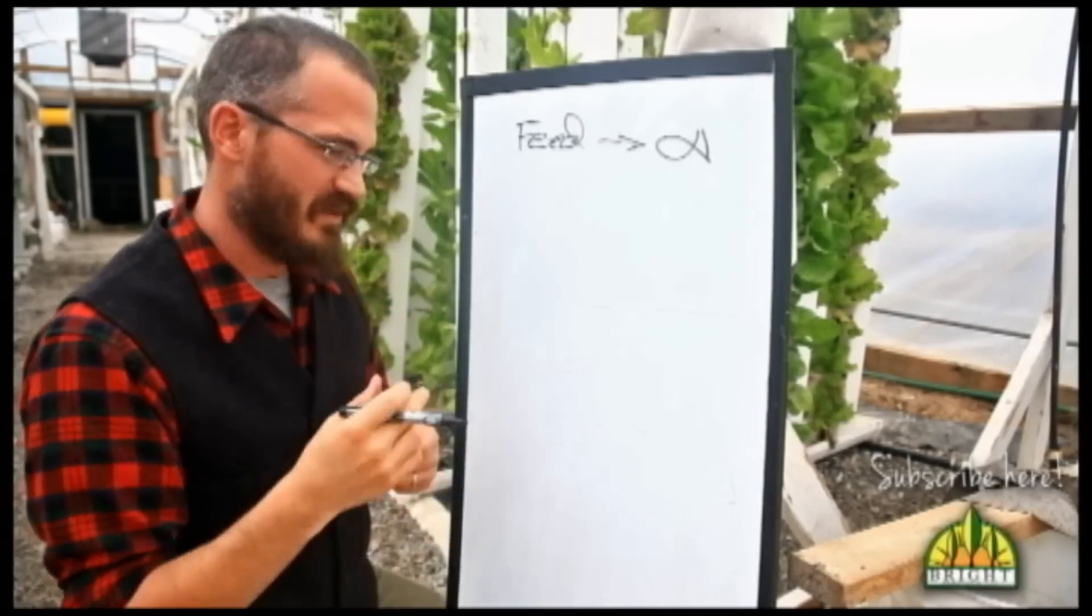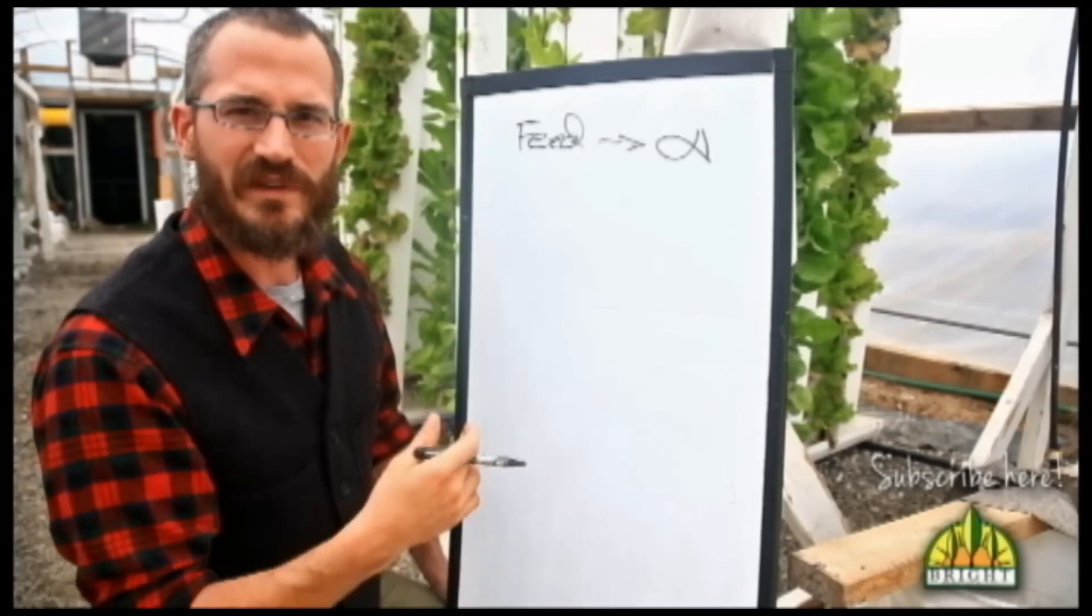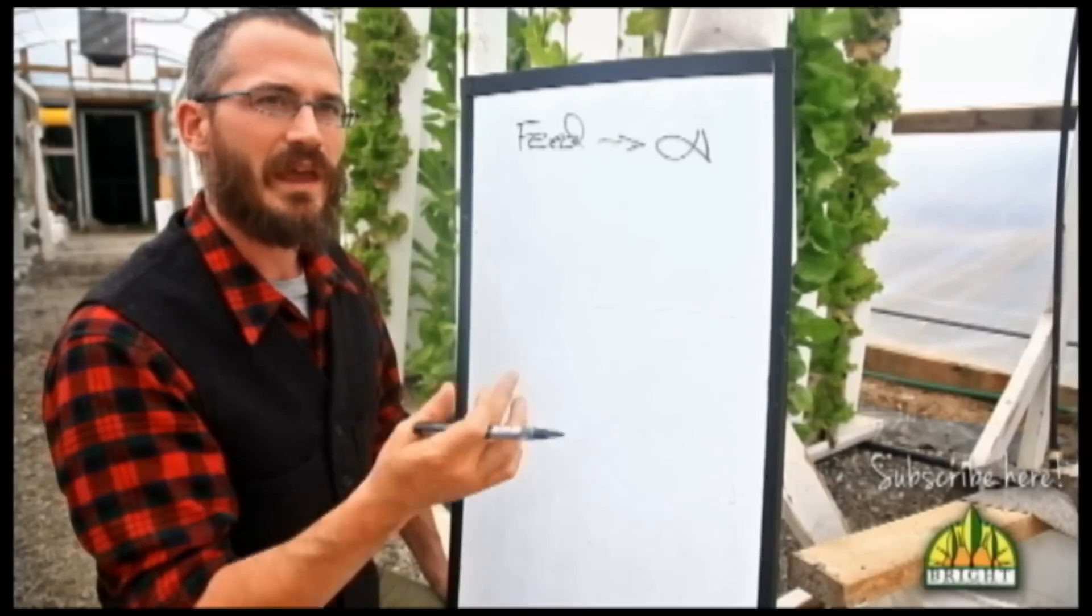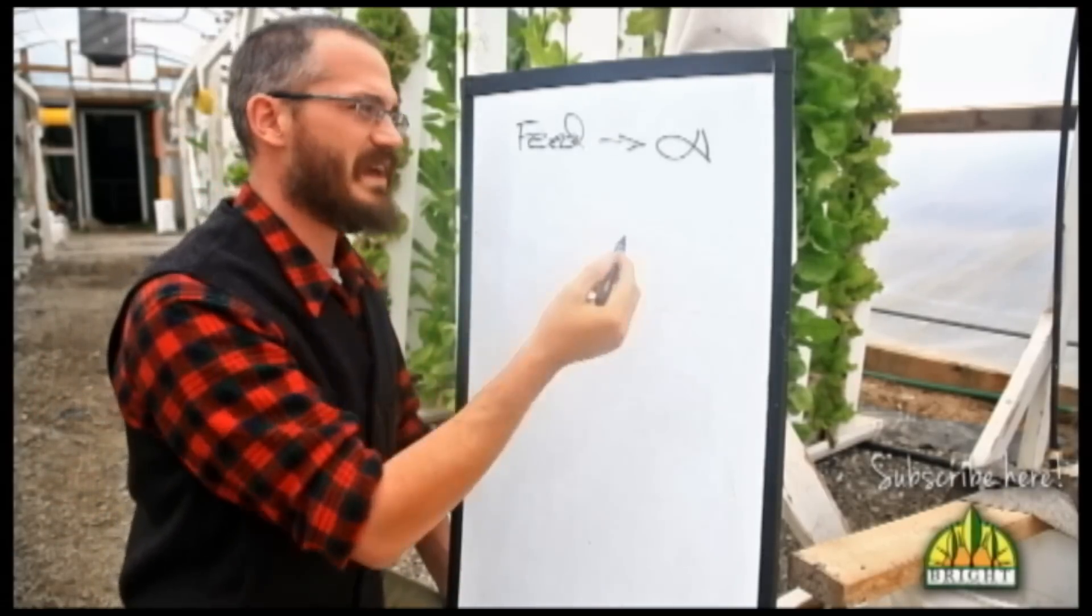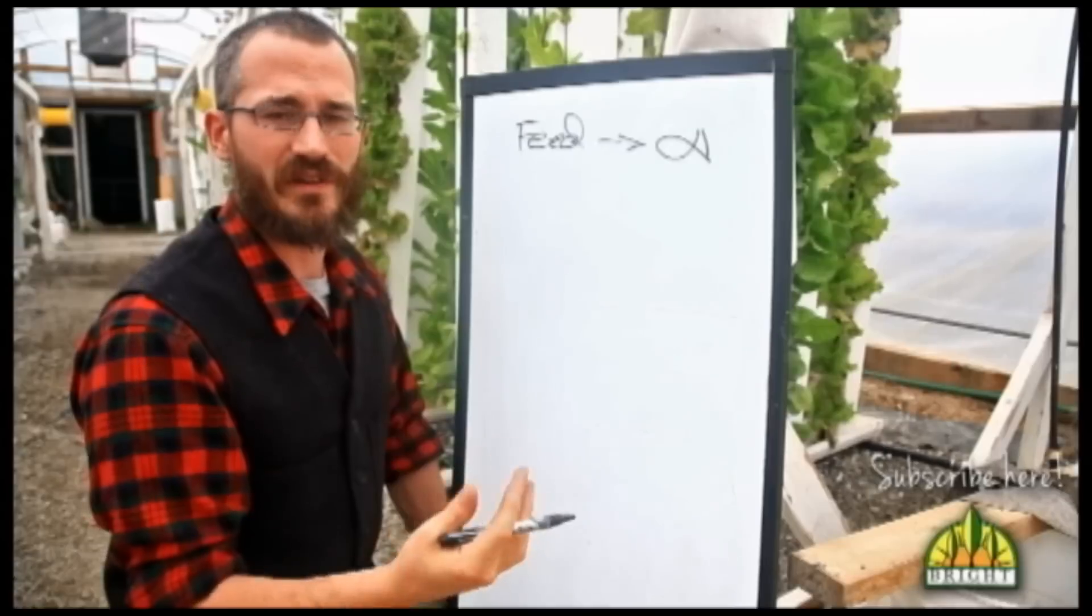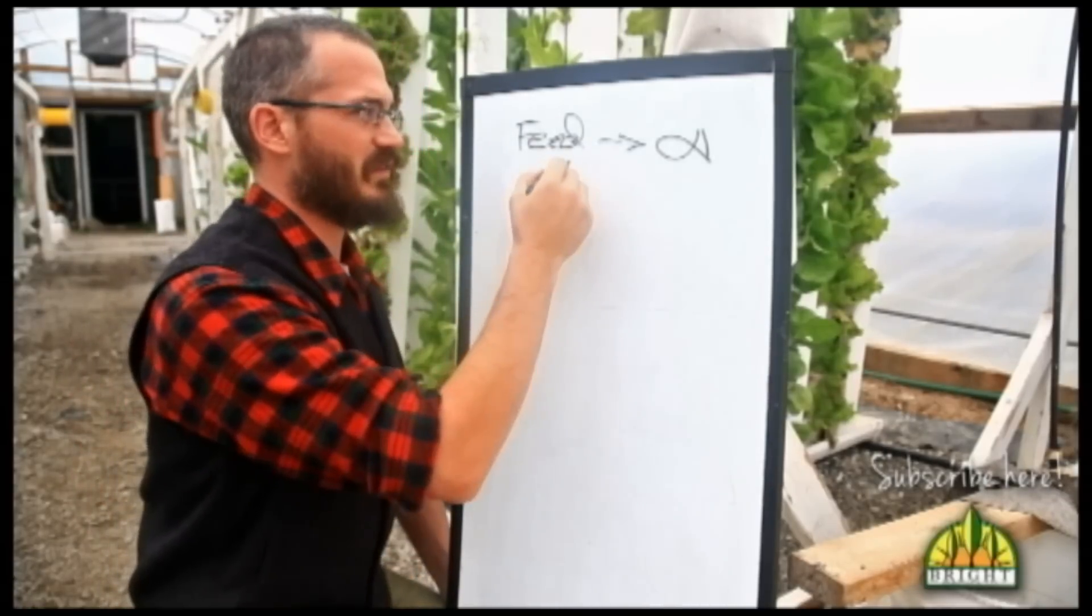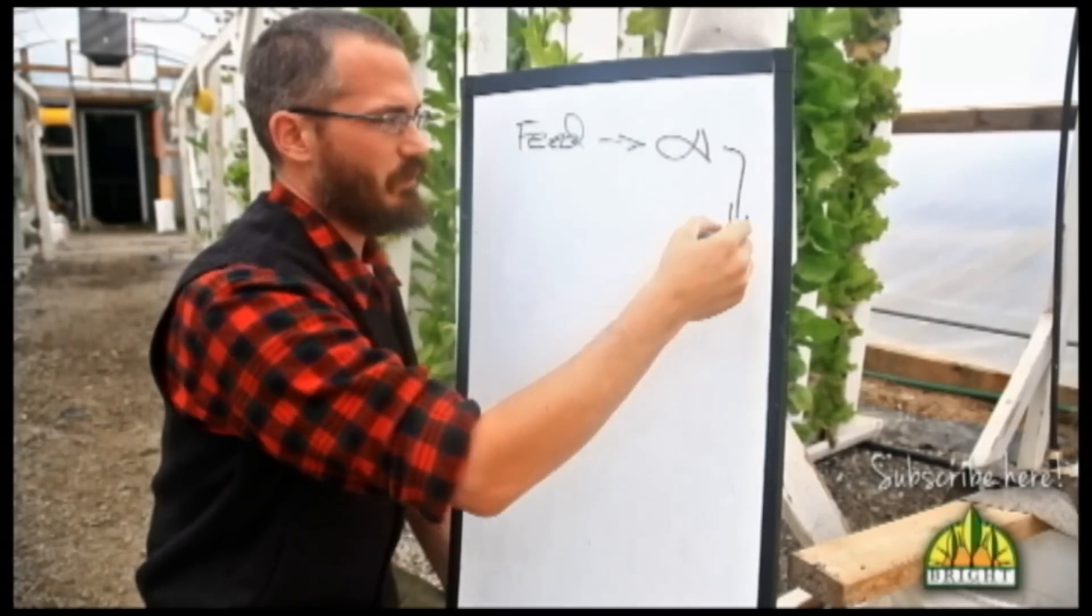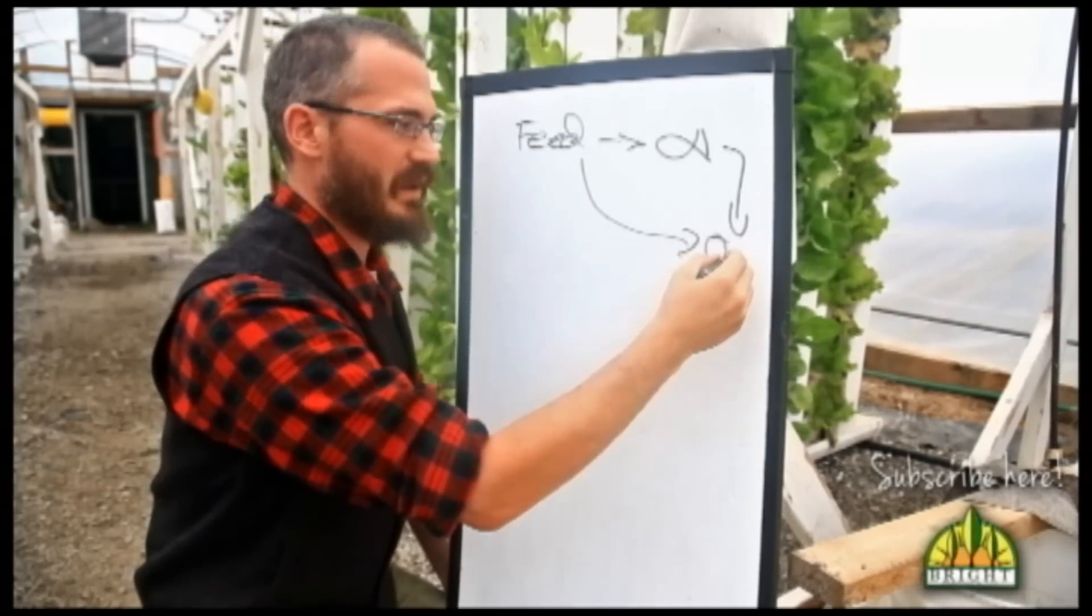The stuff that they're eating is being digested in their gut and their feces contain organic solids. We also have excess feed that's uneaten and this also constitutes these organic solids that enter our system. So the fish are pooping and we also have a lot of feed that's uneaten and we end up with organic solids.